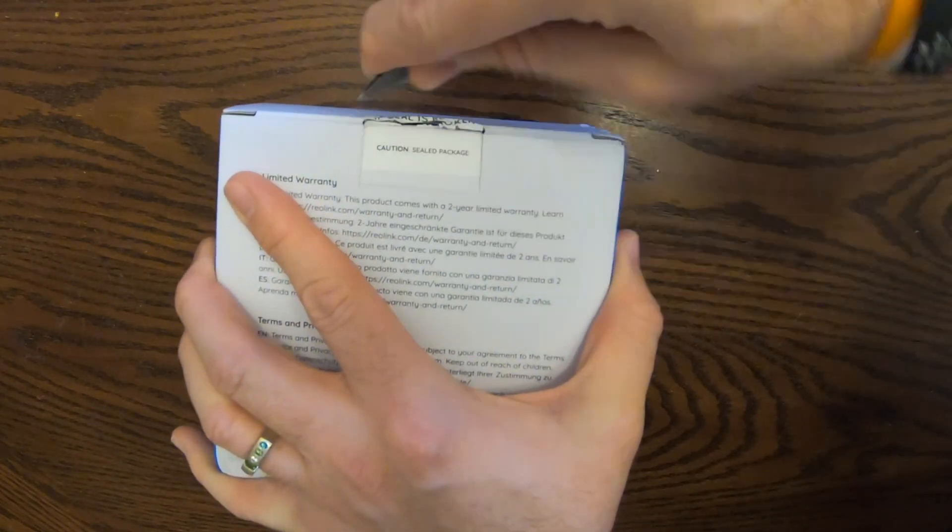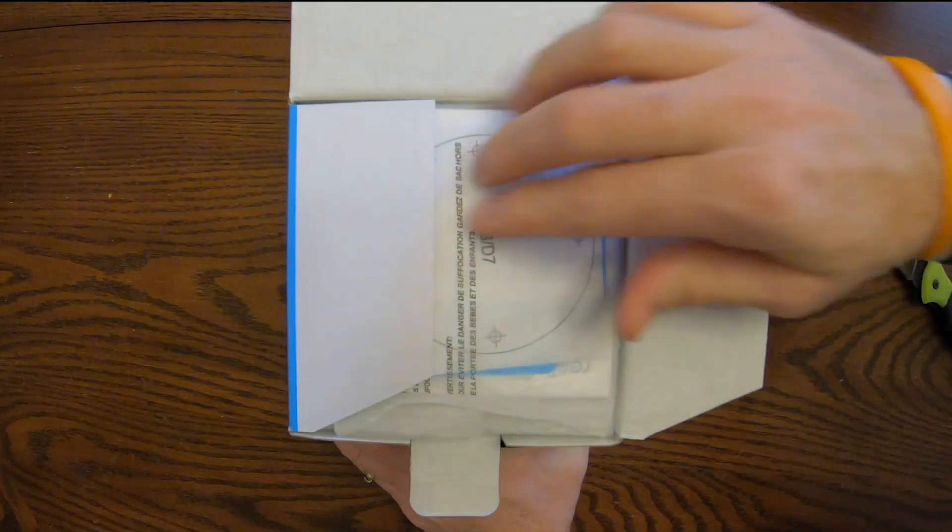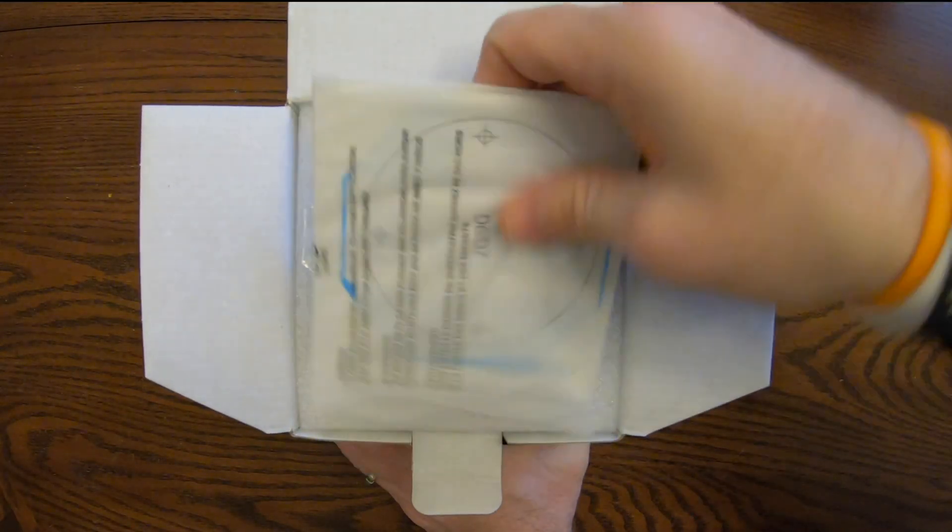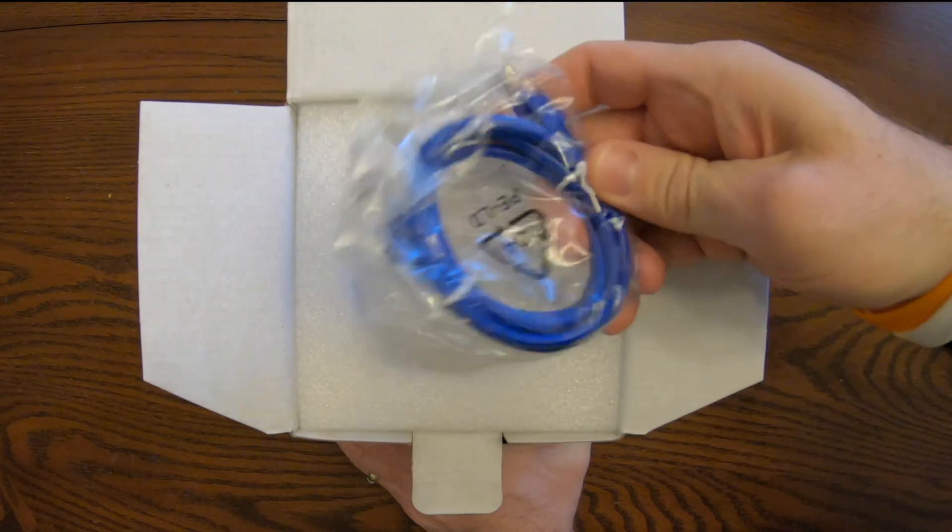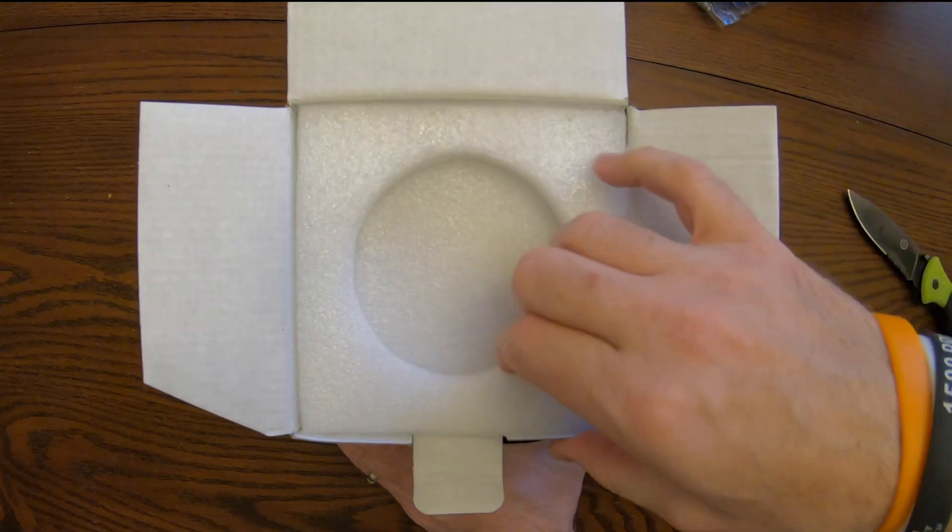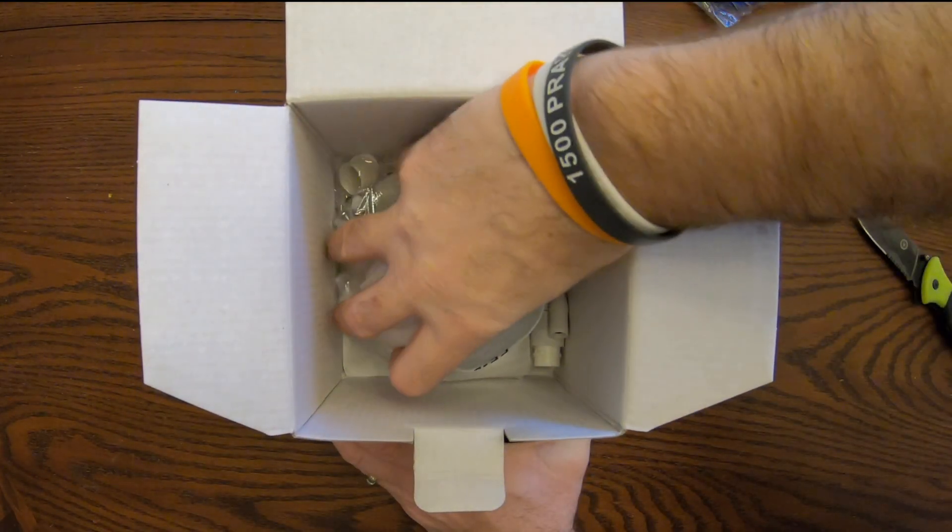Let's cut this open right here. Alright, we got the template and manual, ethernet cable, piece of protective foam, and there's the camera.